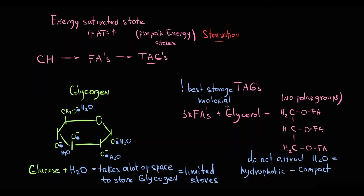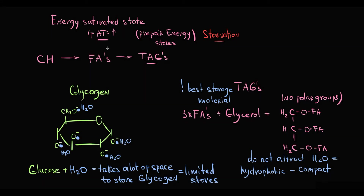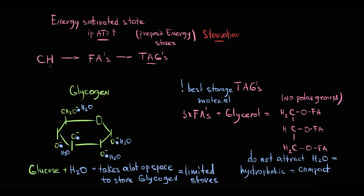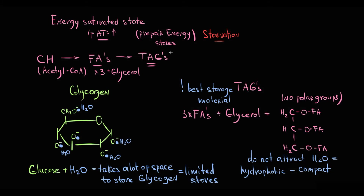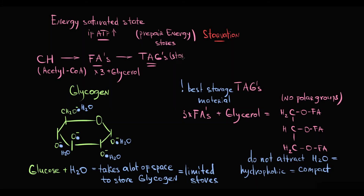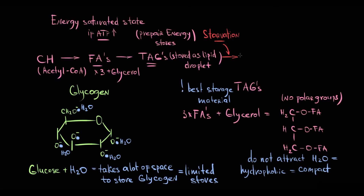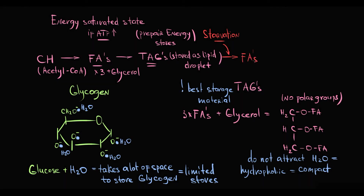The general picture of fatty acid synthesis is that in an energy-saturated state, when tissues do not require additional energy, they use metabolites from glucose degradation — acetyl-CoA molecules — to produce fatty acids. From three fatty acids and glycerol, tissues produce triacylglycerol molecules that can be stored as lipid droplets. When tissue requires additional energy, this triacylglycerol undergoes hydrolysis, releasing fatty acids that undergo beta-oxidation to produce ATP.